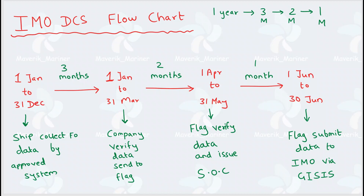The key numbers to remember from the right side of the flowchart: 1 year — ship collects data; 3 months — company verifies the data and sends it to the flag; 2 months — flag verifies and issues Statement of Compliance; 1 month — flag submits the data to IMO. Remember: 1 year, 3 months, 2 months, 1 month. This is a cyclic process.